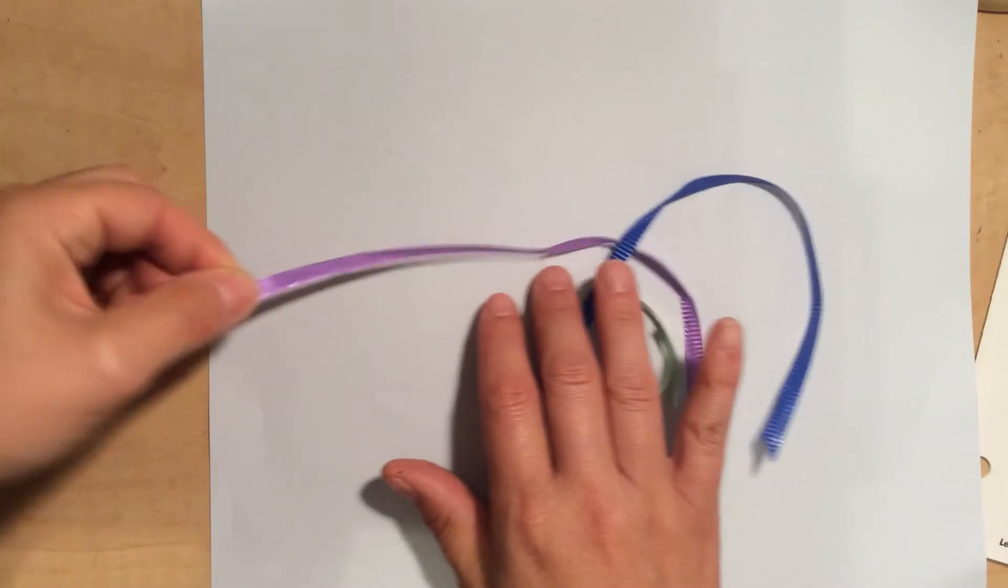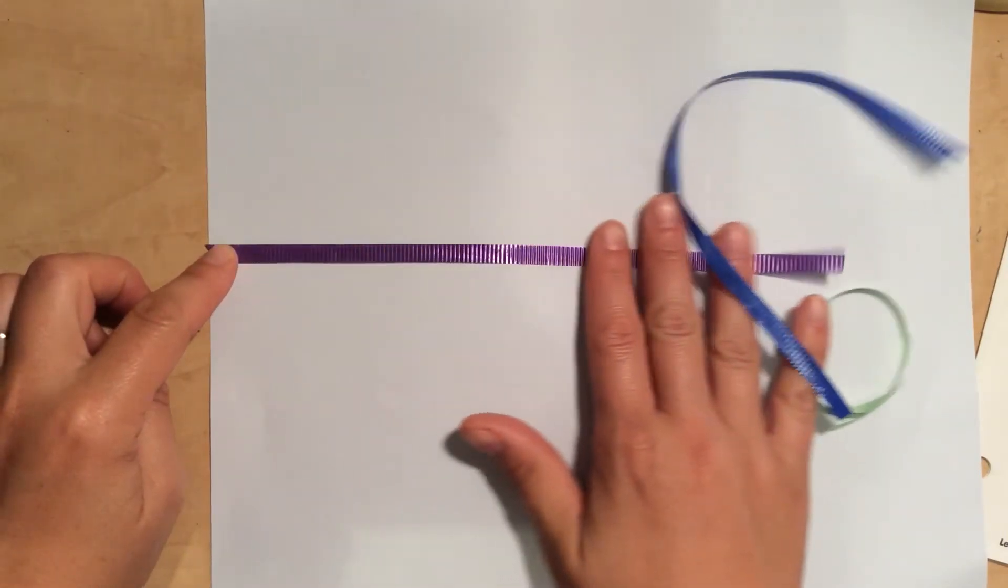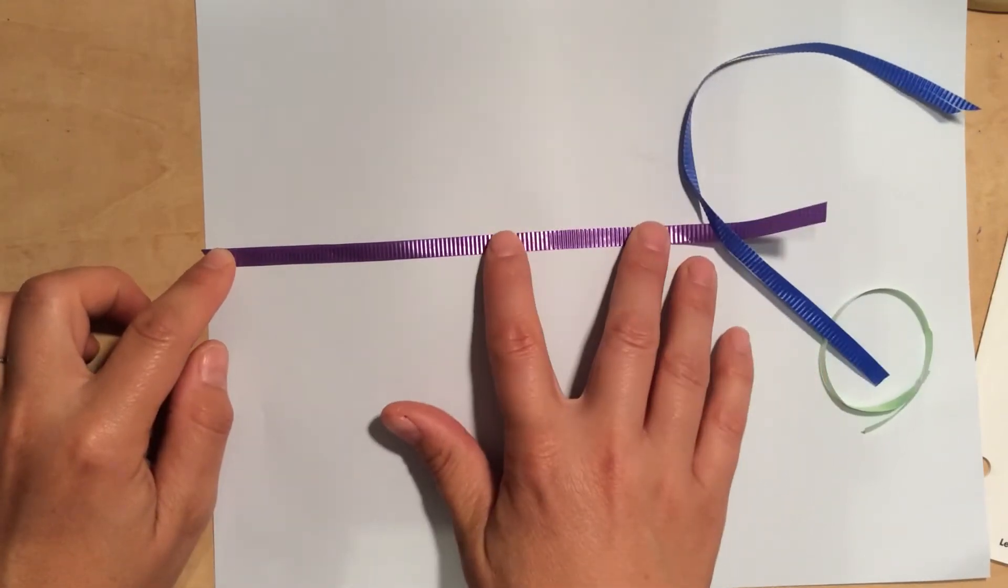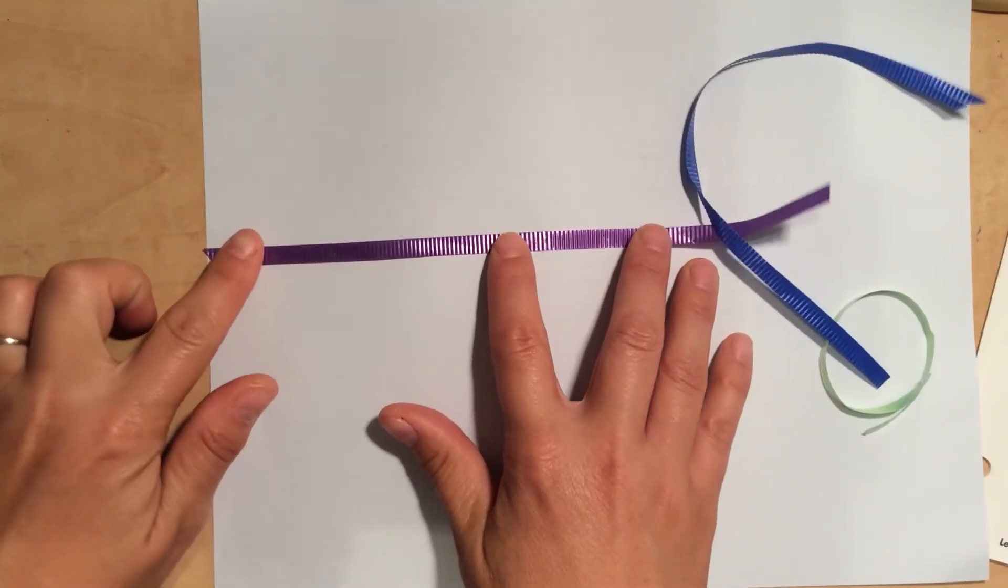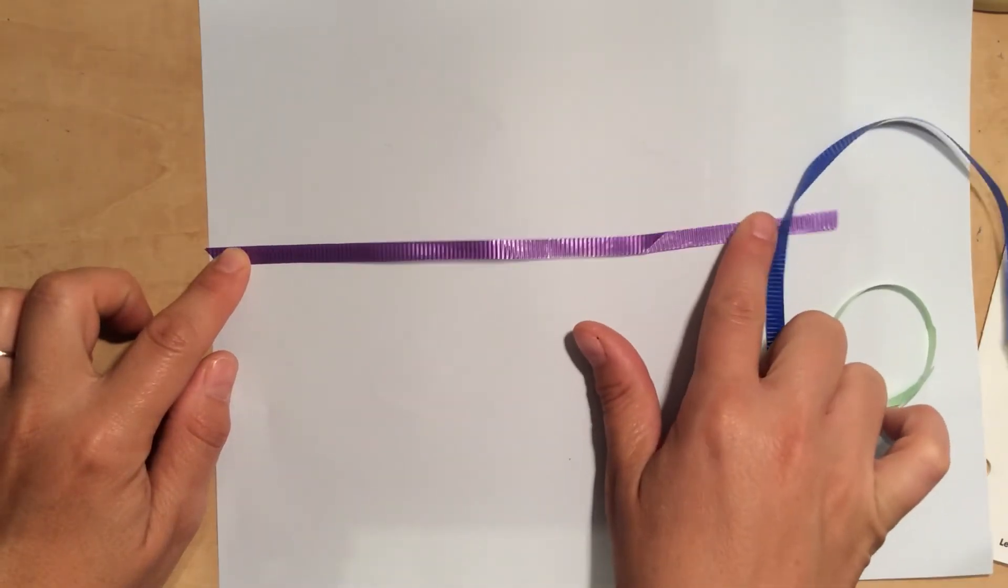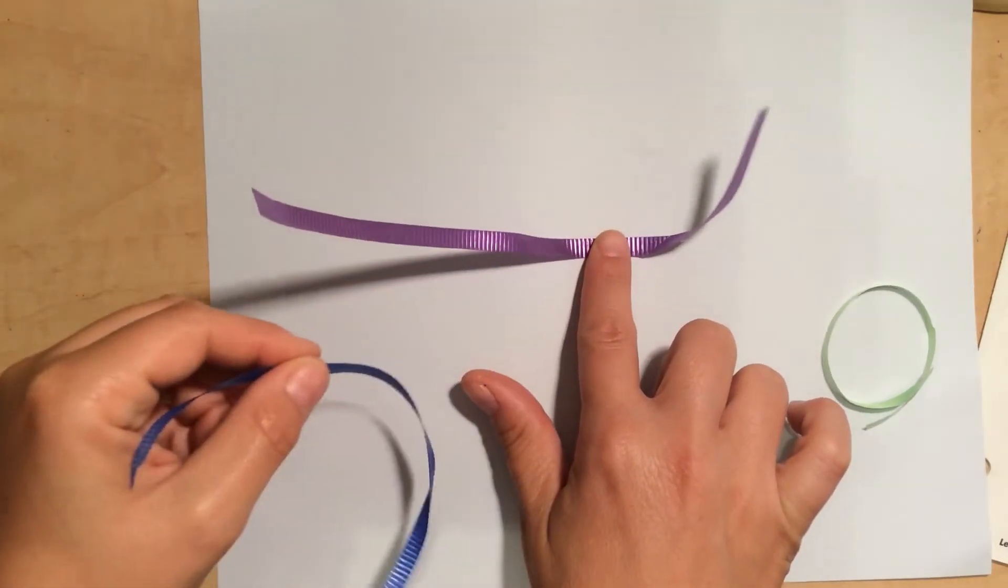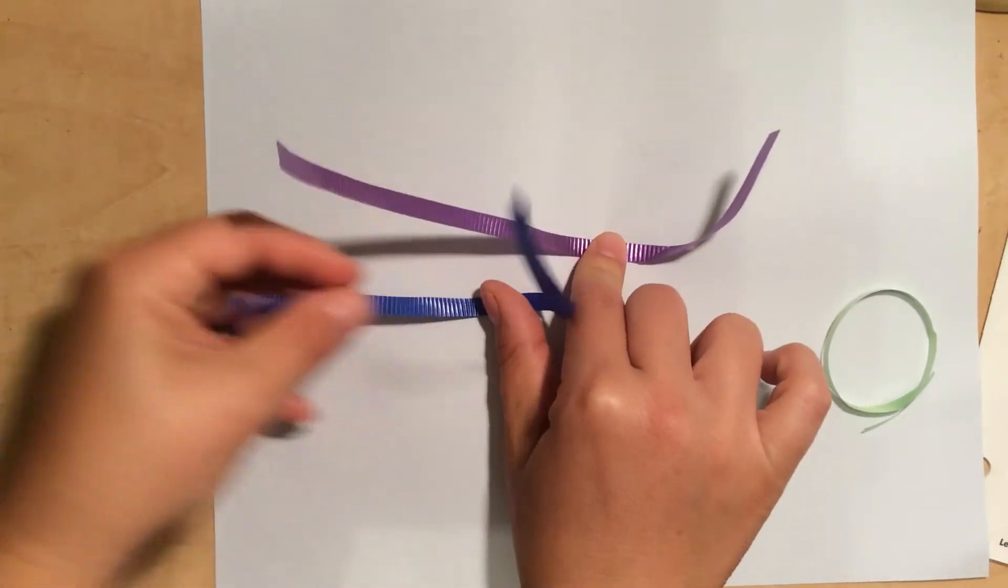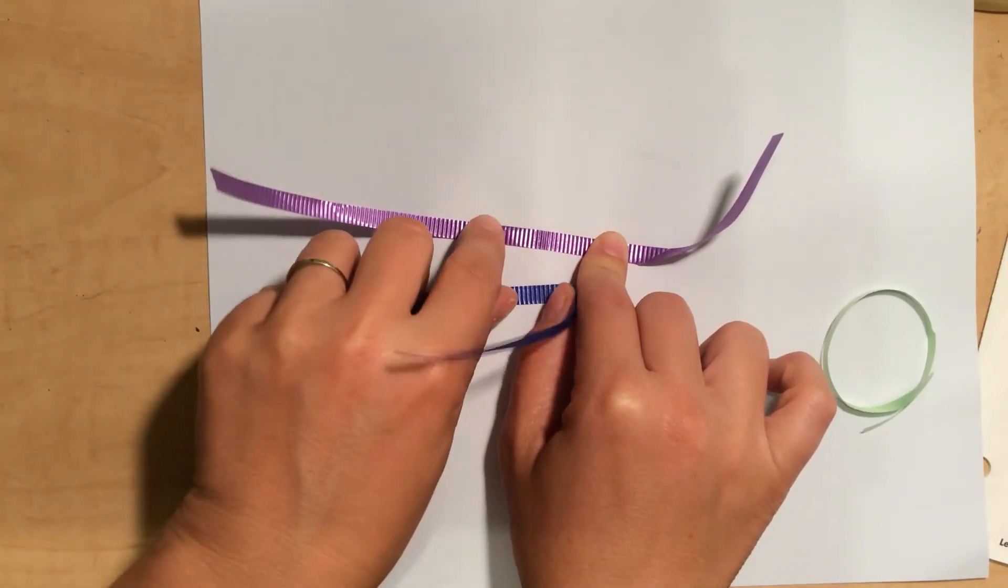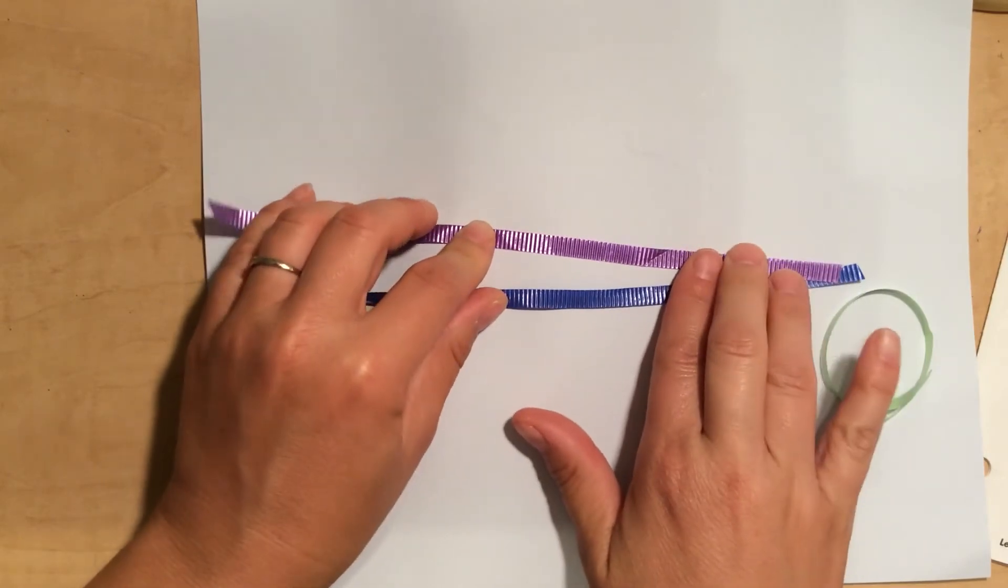So I'm going to take this ribbon and line it up like that, just like that. And I'm going to kind of hold it in place, but I know that it's starting over here and it's ending over here. Then I'm going to take this ribbon and align it here and set it down like that. Oh my goodness, look at that.